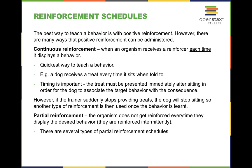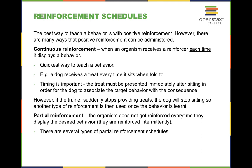Continuous reinforcement is when you get a reinforcer every single time. Partial reinforcement doesn't happen every single time, and can be even more reinforcing than continuous because it's exciting — like gambling, you never know when you're going to hit. We have four schedules: fixed interval, fixed ratio, variable interval, and variable ratio. Fixed interval means you get reinforced after a set amount of time — like every 10 minutes. Fixed ratio means after every fifth response, for example. Variable interval varies the time before you receive reinforcement.